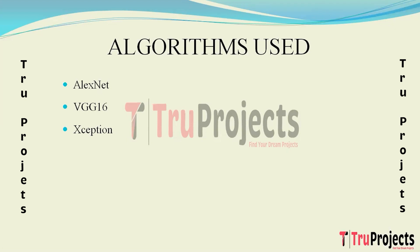The third algorithm is Xception, a deep learning architecture that extends the idea of separable convolutions. It aims to capture more complex features in data, and Xception provides enhanced feature extraction capabilities, making it suitable for intricate patterns in RBC images.